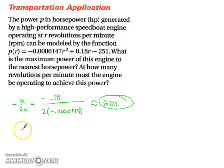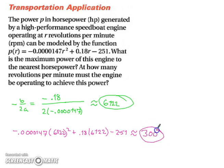So now substituting that back in, we end up with negative 0.0000147 times 6,122 squared. So just because the numbers start to become a lot larger, the process is still the same, which gives you about 300. So the maximum power is about 300. That's your max power. And it needs to be done at 6,122 rpms.